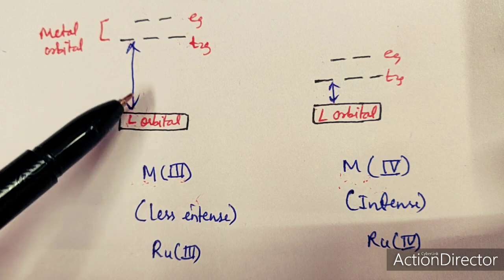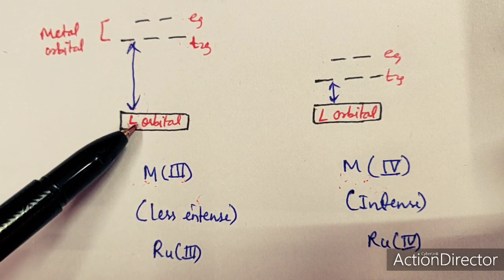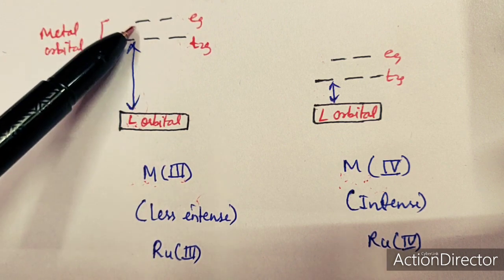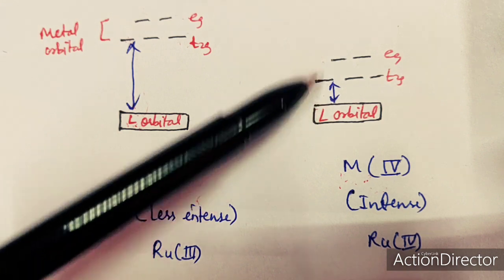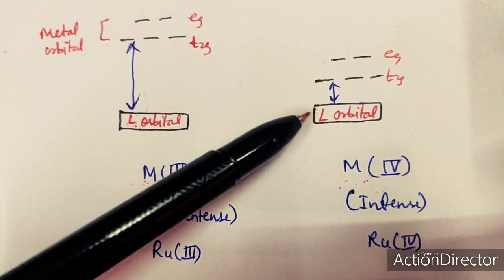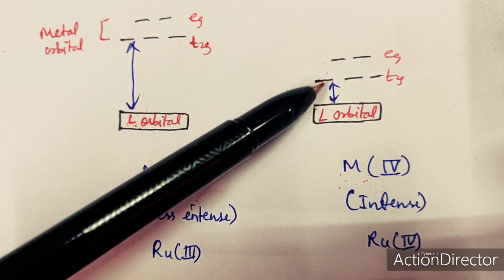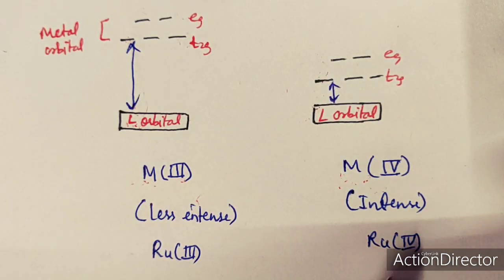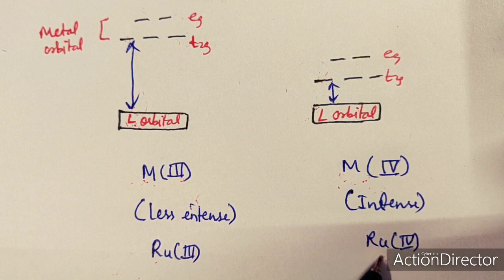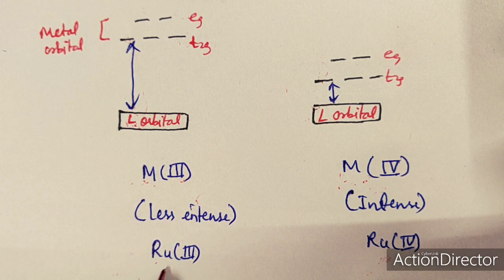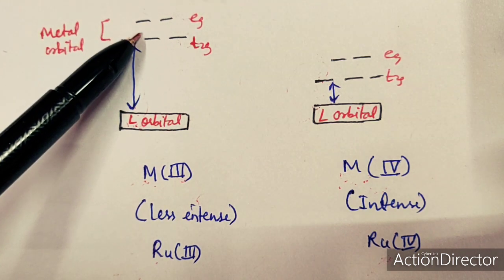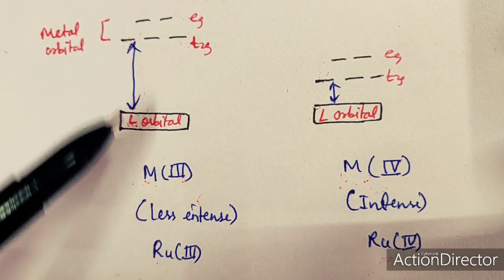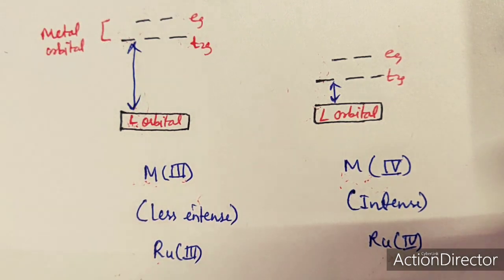The gap between the ligand orbital and the M³⁺ metal orbital is larger, while the gap for M⁴⁺ is smaller. Transition of an electron from ligand to the M⁴⁺ metal orbital is easier due to the lower gap. Therefore the complex with a higher oxidation state metal will be more intense in color. Comparing Ru⁴⁺ and Ru³⁺ complexes, the Ru⁴⁺ complex will be more intense.